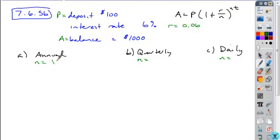For an annual compounding, it's once a year. Quarterly is every three months or four times a year. And daily, assuming it's a non-leap year, is 365.